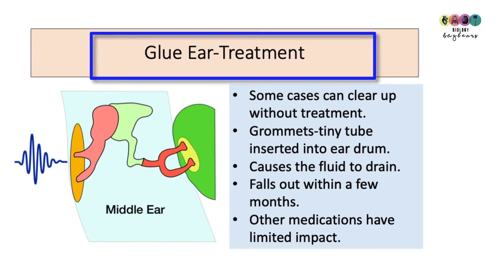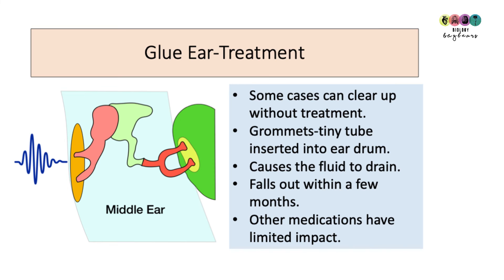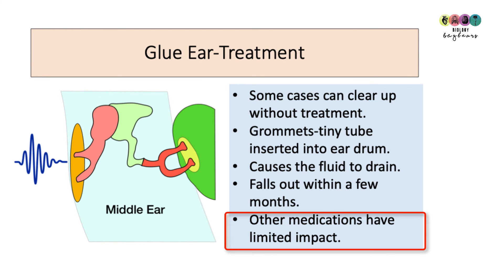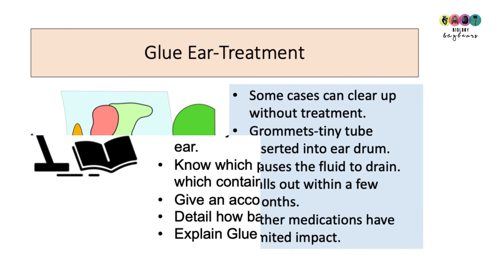The treatment for glue ear: some cases clear up on their own without treatment. If they don't, grommets are one solution. A grommet is a tiny tube inserted surgically into the eardrum, causing the fluid in the middle ear to drain away. The grommet will eventually fall out. Medications were previously used but are now said to have limited impact.